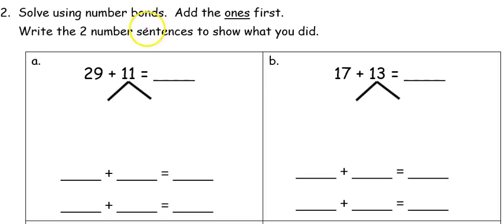We're going to do the same thing in the second part of the lesson but this time we're going to add our ones first. Here's what that looks like. I'm adding 29 plus 11. I'll break my 11 into 10 and 1.